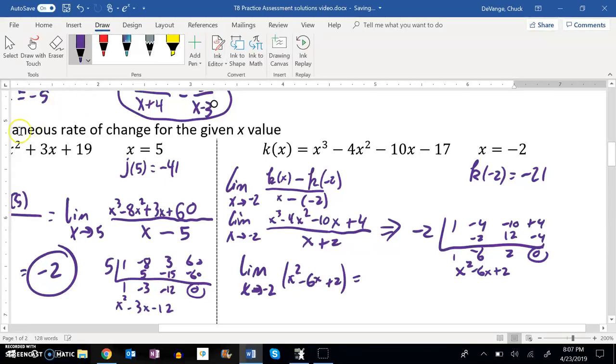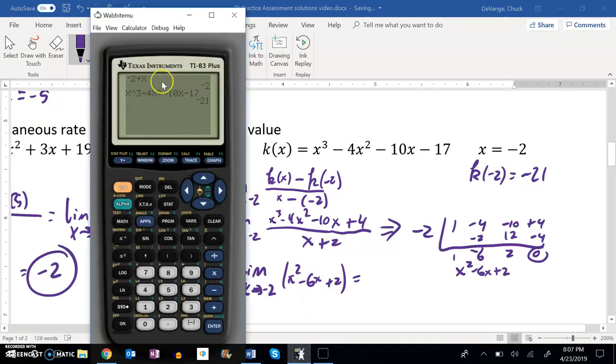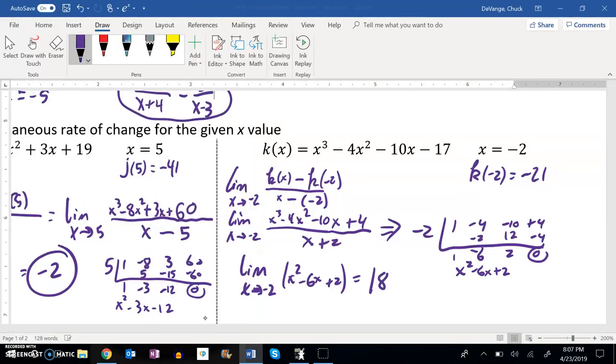And then x is negative 2, I'm going to evaluate it for that, so just plug in negative 2. And x is already negative 2 in my calculator, so x squared minus 6 times x plus 2 is 18. So that is my instantaneous rate of slope of this function at that point when x is negative 2, y is negative 21.